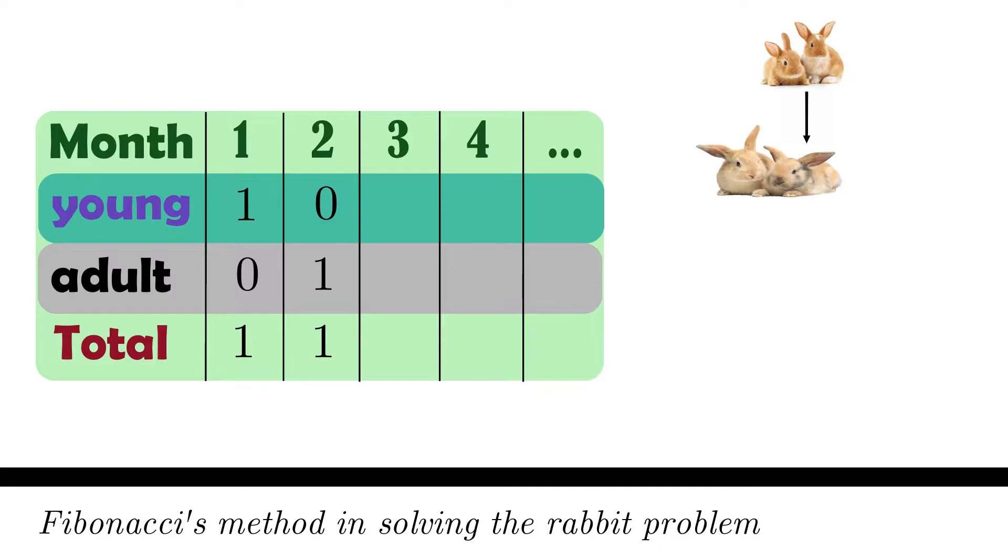Now at the start of the third month, there are two rabbit pairs: the adult pairs which are the parents and the young pairs which are the baby pairs. Following this pattern, the adult pair begets a baby pair but the previous baby pair simply matures.